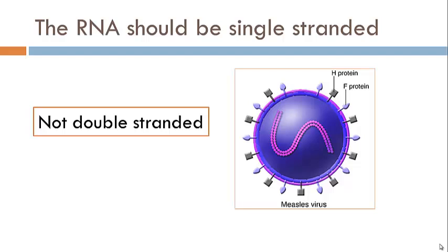The RNA should be single-stranded, but it is showing the RNA as double-stranded. To be drawn correctly, the RNA should just be a single strand of nucleotides.